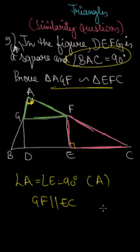Corresponding angles work like this - I told you in the previous question that when two lines are parallel and cut by a transversal, corresponding angles are equal. So GF and EC are both parallel lines, and AC is the transversal.